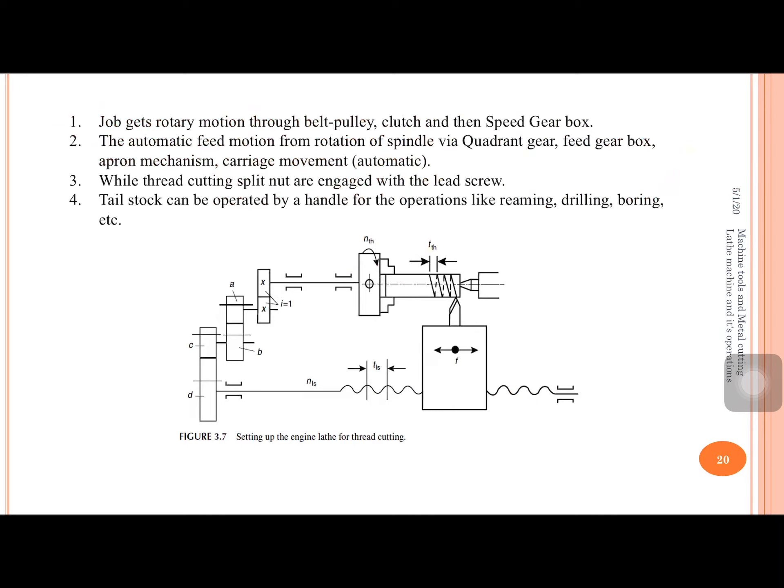In summary: rotary motion (cutting motion) is achieved through the belt-pulley, clutch, and speed gearbox. Feed motion can be achieved automatically or manually. For manual feed, rotate the corresponding handle — cross feed handle, longitudinal feed handle, or angular feed handle. For automatic feed, it can be achieved either through the feed rod or through the lead screw. Via the feed rod, a cluster of gears in the apron box transfers motion to the pinion, which contacts the rack to achieve longitudinal feed motion for the carriage.